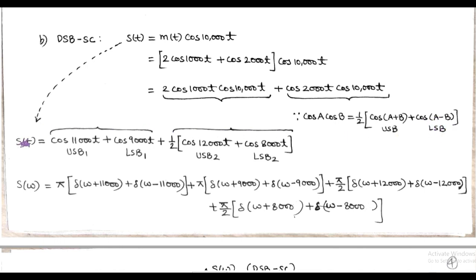Applying the formula, we get the double sideband suppressed carrier ST equals cos(11000t) plus cos(9000t) plus 1/2[cos(12000t) plus cos(8000t)]. The high-frequency terms are called the upper sideband and the lower-frequency terms are called the lower sideband.